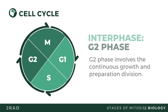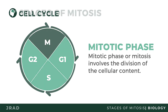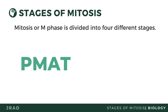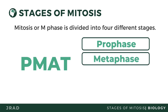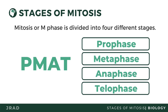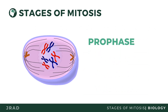The mitotic phase, or mitosis, involves the division of the cellular content. Mitosis is divided into four phases. We can use the acronym PMAT to easily remember the order: Prophase, Metaphase, Anaphase, and Telophase.